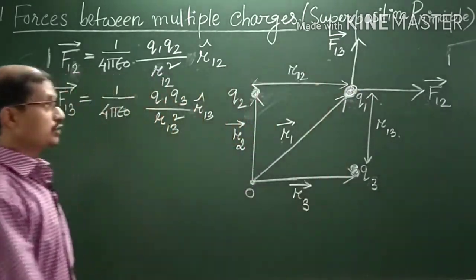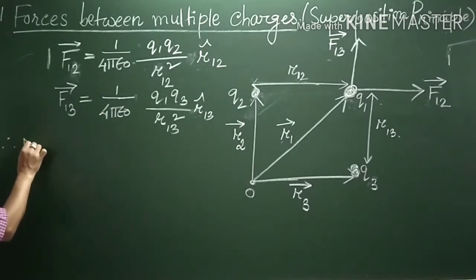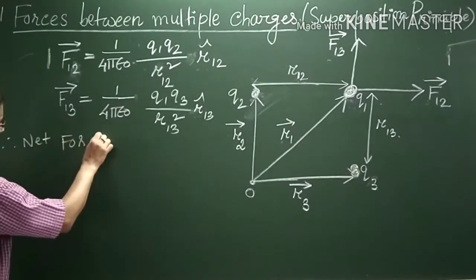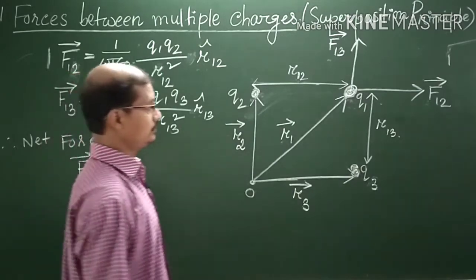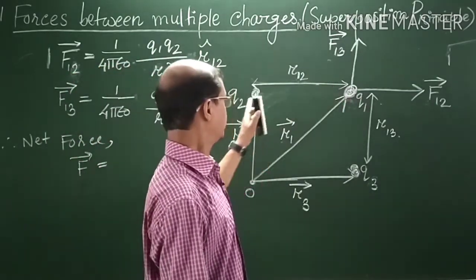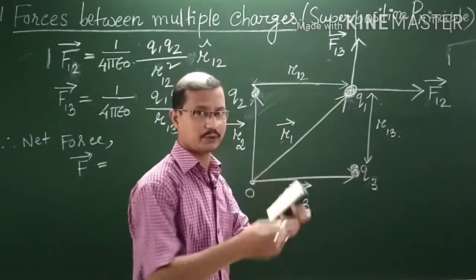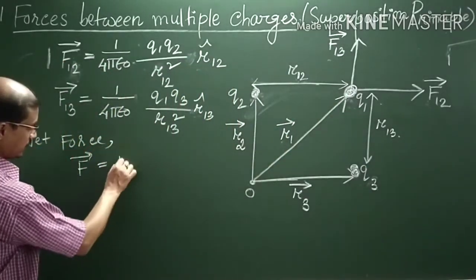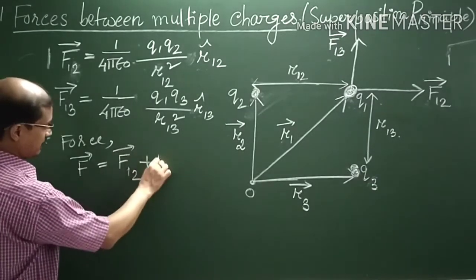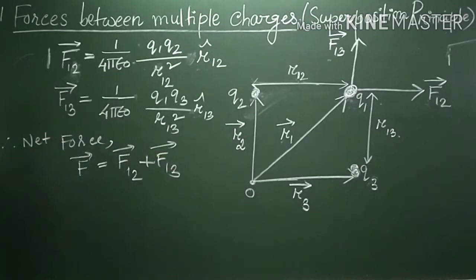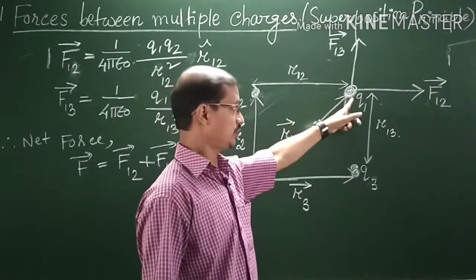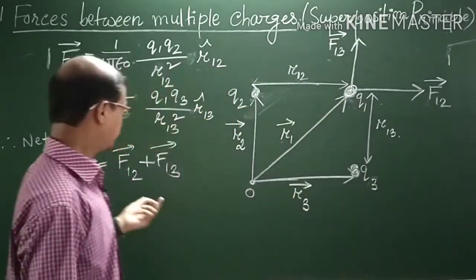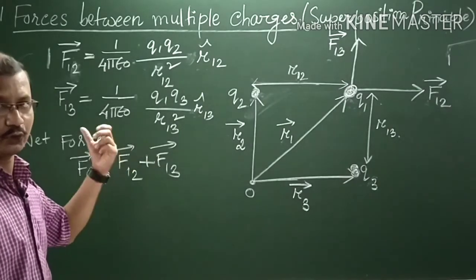So what will be the net force on Q1? The net force, suppose F, is the force on Q1 due to Q2 plus force on Q1 due to Q3. These two forces we add vectorially. So it can be written as F12 plus F13. This is the superposition principle. To calculate total force, we add individual forces vectorially.